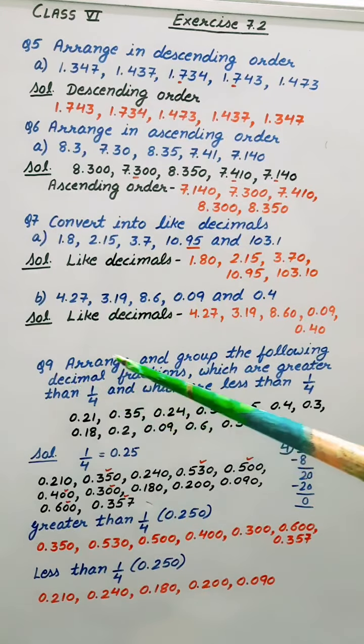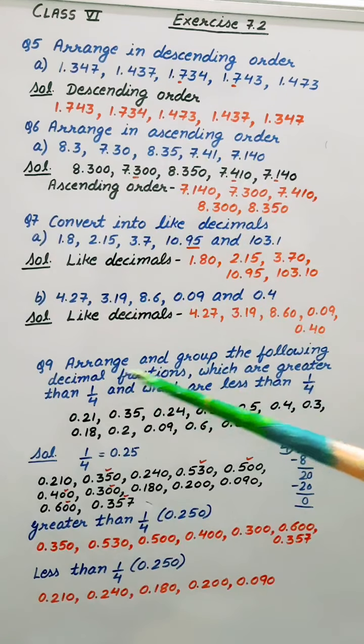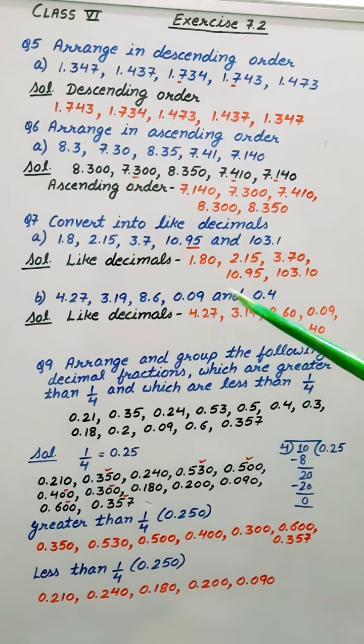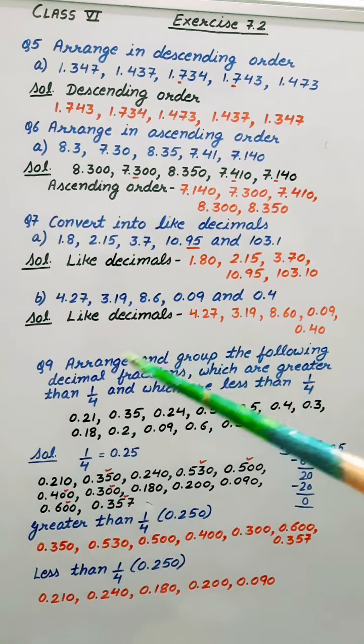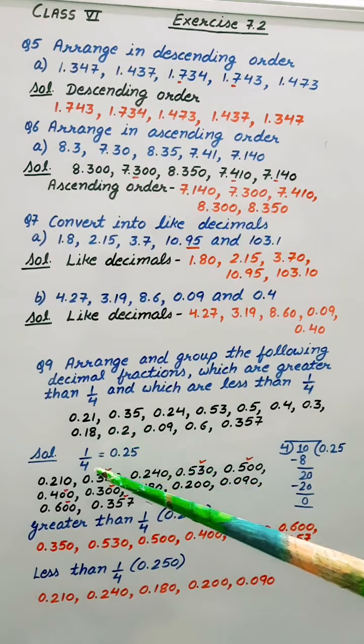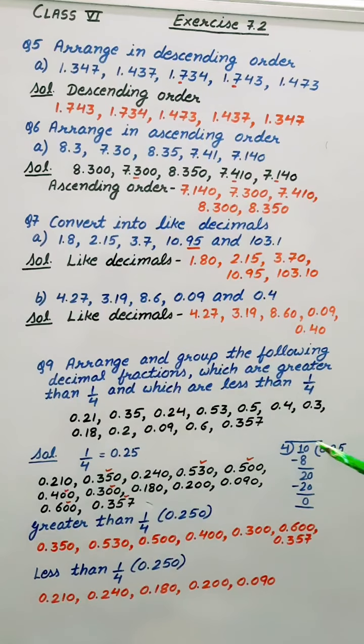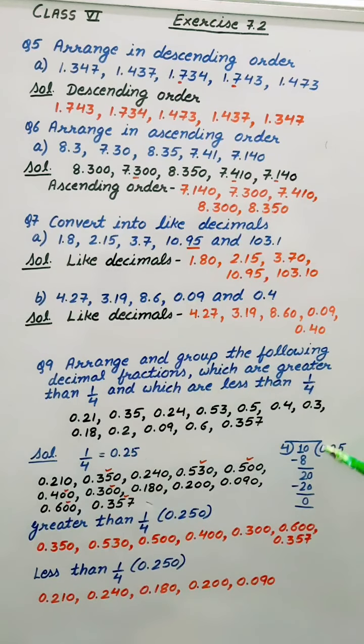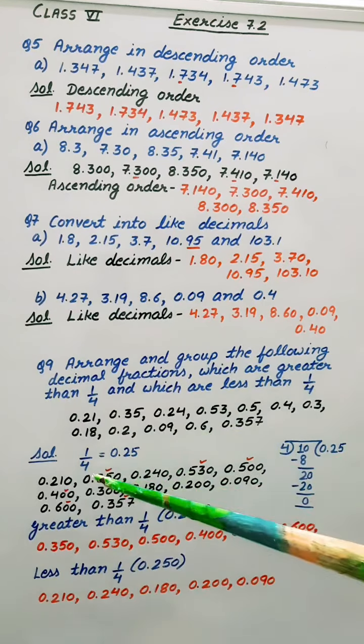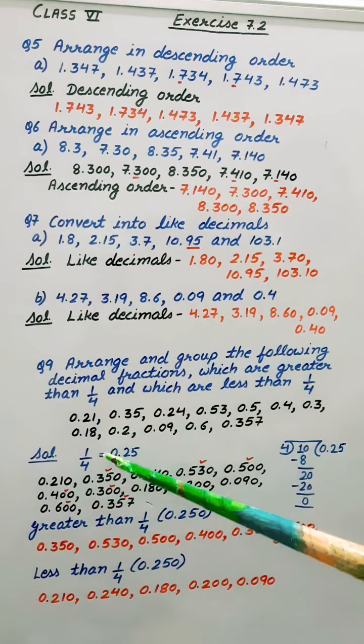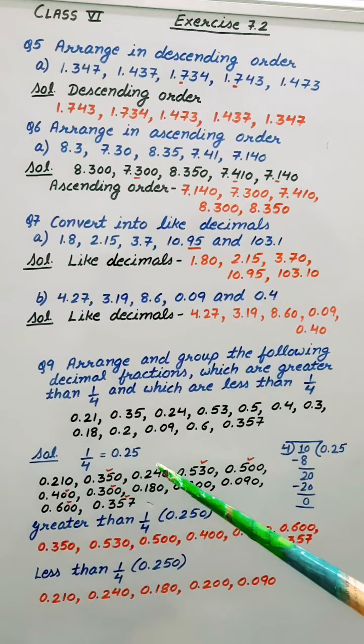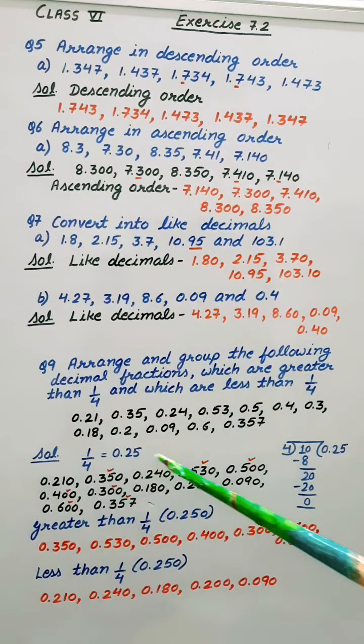Coming to 9th question: Arrange and group the following decimal fractions which are greater than 1 by 4, which are less than 1 by 4. Now first of all, 1 by 4, when we divide this, result is 0.25. So now we have to see the numbers which are greater than 0.25 and the numbers which are less than 0.25.